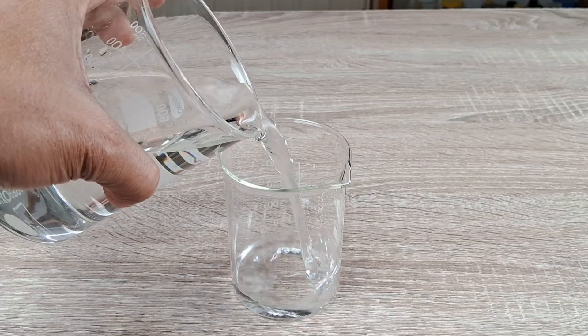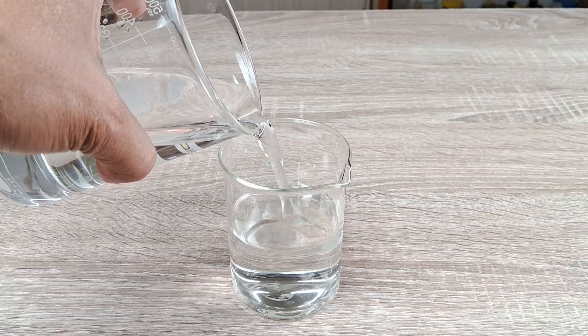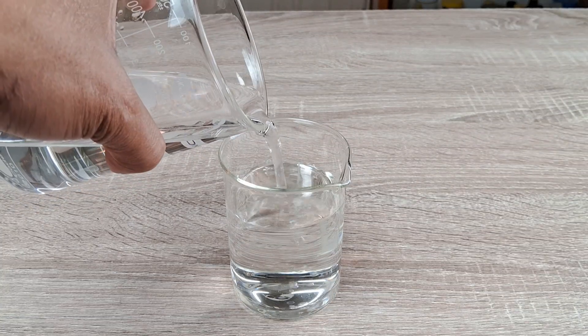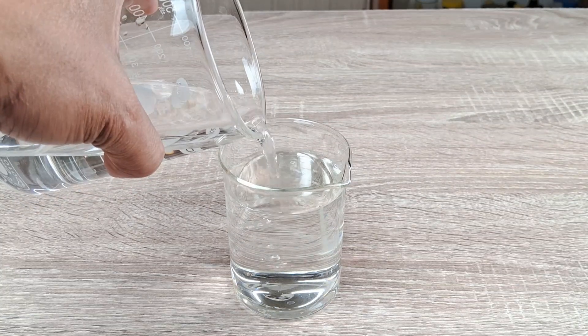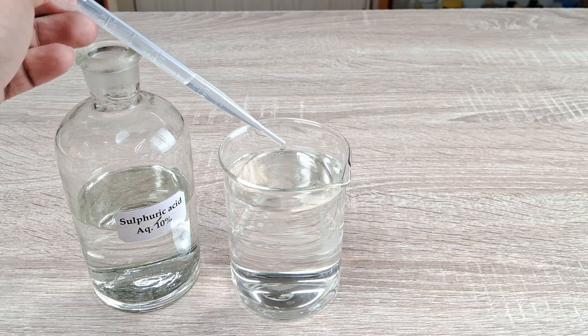take a 250 or 500 ml beaker and fill it with clean water almost to the brim. Add several drops of dilute sulfuric acid to the beaker and stir.